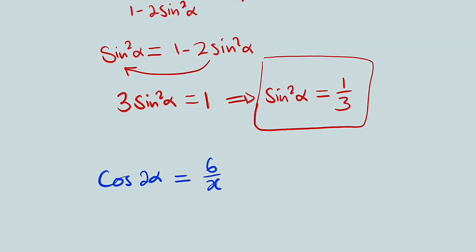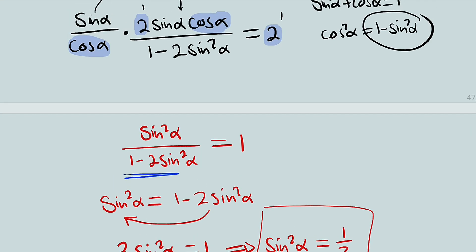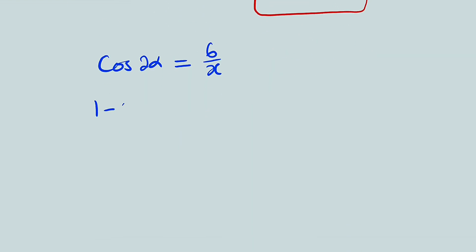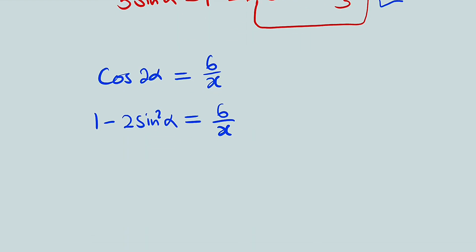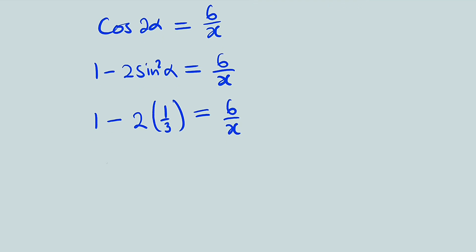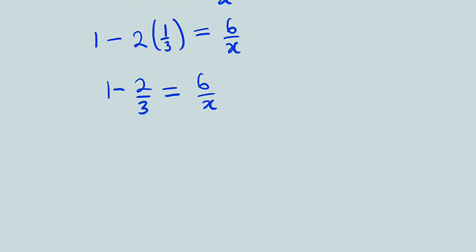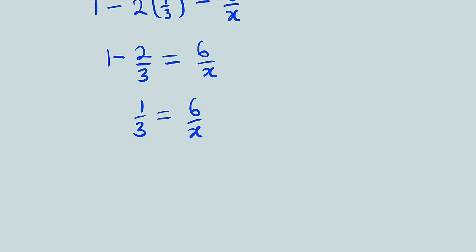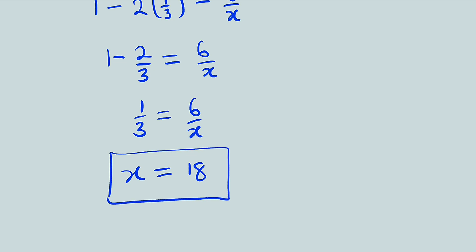But we derived that cos(2 alpha) = 1 − 2 sin²(alpha). So 1 − 2 sin²(alpha) = 6/x. Since sin²(alpha) = 1/3, we have 1 − 2(1/3) = 6/x, which gives 1 − 2/3 = 1/3 = 6/x. Cross multiplying: x = 3 × 6 = 18. Therefore, the value of x is 18 units.